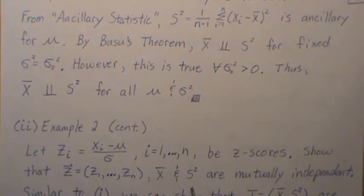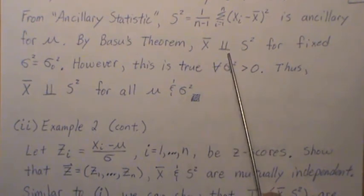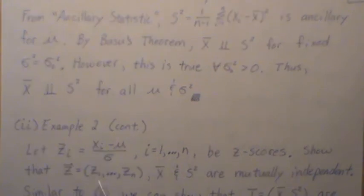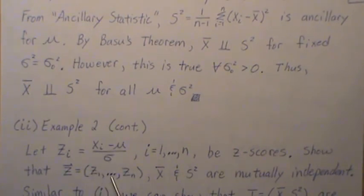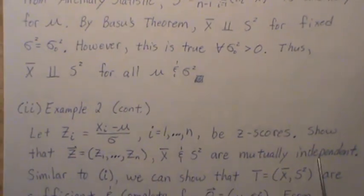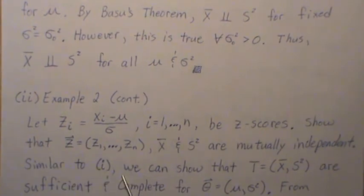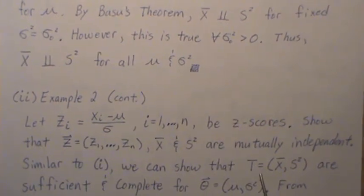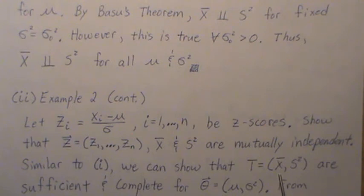Now we just showed that X bar and S squared are independent up here. So we need to show that the Z scores are independent of this. They're all mutually independent. So similar to one, we can show that our sufficient complete statistic is X bar and S squared. So we take the joint distribution, put it in an exponential form, and then we show that these are complete sufficient.